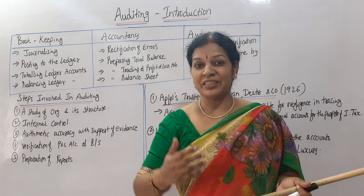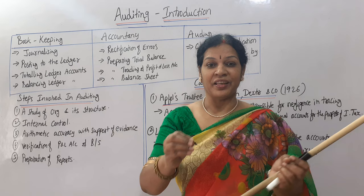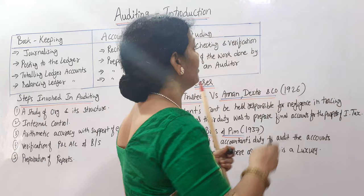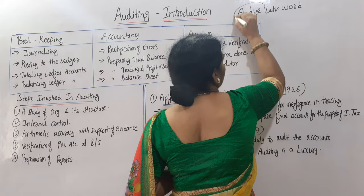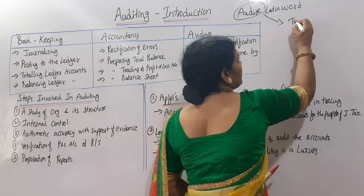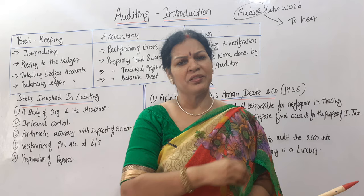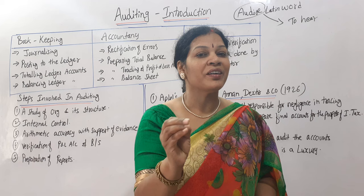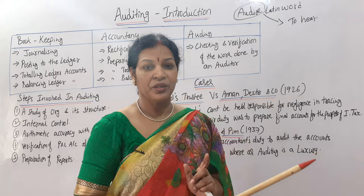Auditing means to verify the accounts. Once the accounting work is completed, the auditor's work is to verify it. Now, how did this word come about? Auditing has come from the Latin word 'Audire.' The meaning of Audire is 'to hear.' In olden days, a special person was appointed after accounts were completed to simply hear what transactions had taken place — that is the reason auditing comes from the word Audire.